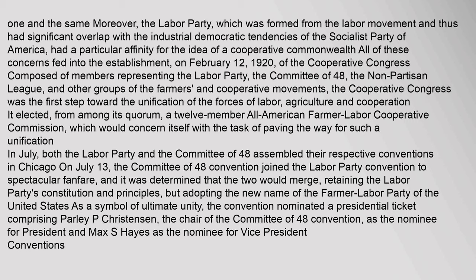In July, both the Labor Party and the Committee of 48 assembled their respective conventions in Chicago. On July 13, the Committee of 48 Convention joined the Labor Party Convention to spectacular fanfare, and it was determined that the two would merge, retaining the Labor Party's constitution and principles, but adopting the new name of the Farmer Labor Party of the United States. As a symbol of ultimate unity, the convention nominated a presidential ticket comprising Parley P. Christensen, the chair of the Committee of 48 Convention, as the nominee for President, and Max S. Hayes as the nominee for Vice President.